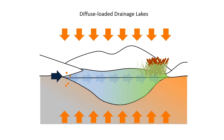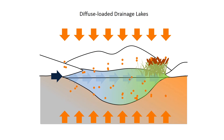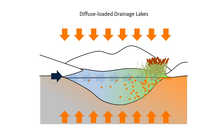In drainage lakes with a diffuse nutrient source, the spatial pattern is reversed. At any given point, only a fraction of the nutrients is removed. As the remaining nutrients are complemented with new nutrients, the concentration builds up towards the outflow point.